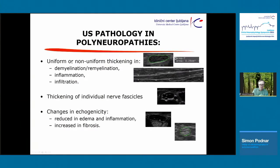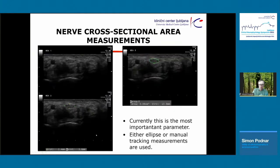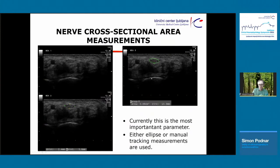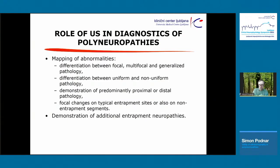In pathology, nerves can be uniformly or non-uniformly thickened, which can be seen in demyelination, inflammation, or infiltration. Individual fascicles can be increased, and you can find changes in echogenicity — low echogenicity can be increased due to different pathologies. Currently, the most important parameter is measurement of the cross-sectional area of the nerve. We map nerves to differentiate between focal, multifocal, and generalized pathology; between uniform and non-uniform pathology; between predominantly proximal or distal pathology; and we can also identify additional entrapment sites.